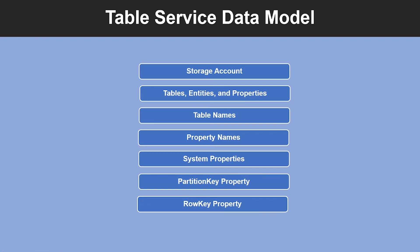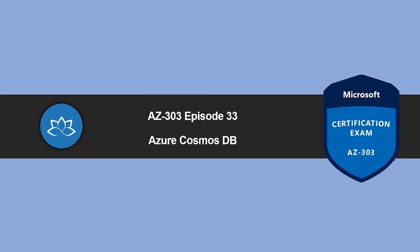A row key is a string value that may be up to 1 KB in size. The timestamp property is a datetime value maintained on the server side to record the time an entity was last modified. That concludes the Azure Table Storage lesson. In the next episode we're going to look into Azure Cosmos DB. I will see you in the next one — until then, take care.